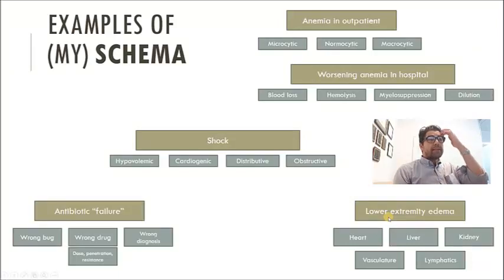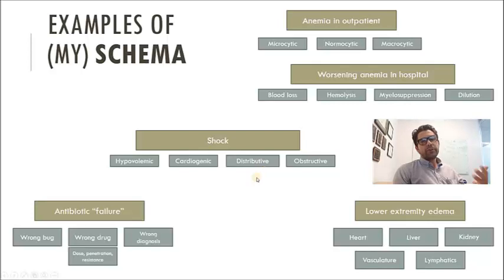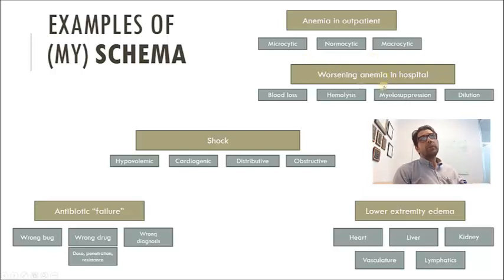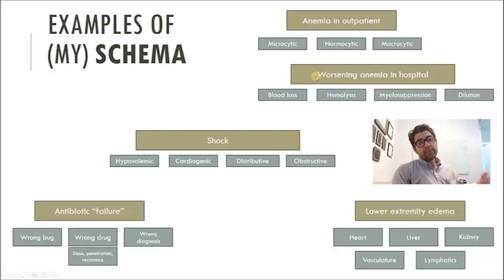Here are other schema I use all the time. If I see someone in shock, I ask: is it hypovolemic, cardiogenic, distributive, or obstructive? If an infection isn't getting better on antibiotics, my scheme for antibiotic failure is: wrong bug, wrong drug, or wrong diagnosis? For anemia, when I worked outpatient I used microcytic, normocytic, or macrocytic. Now as an inpatient physician, if anemia is worsening in the hospital, the mechanisms are blood loss, hemolysis, myelosuppression, or dilution.